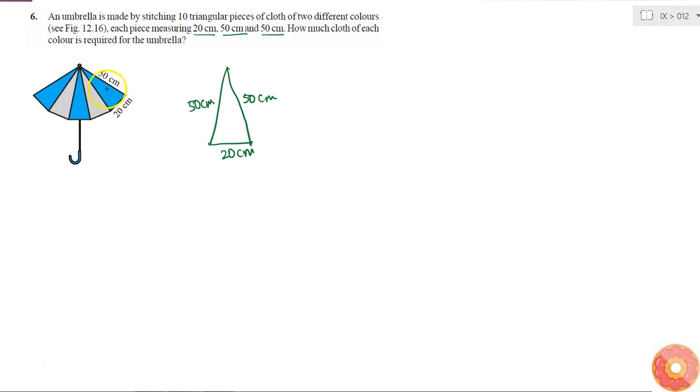Since all the pieces of cloth are identical, first of all if I can calculate the area of one piece of cloth, then I can simply multiply it by the number of pieces to get the total cloth that is required. So for this triangle, if I assume the sides are A as 50, B as this and C as this side, then I can calculate the area using the Heron's formula.